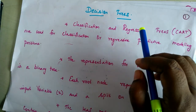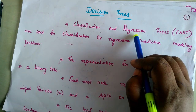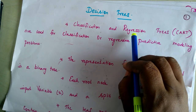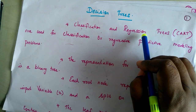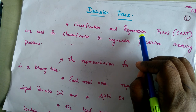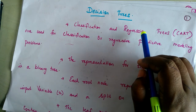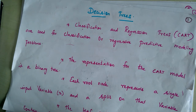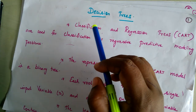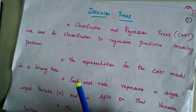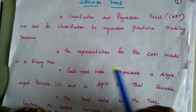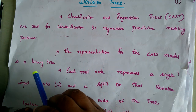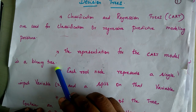In regression, we predict the outcome of a continuous variable. For example, given the square feet of a home, we can predict the rent. We saw such examples in linear regression and logistic regression in previous videos. The decision tree works well with both classification and regression problems, and its representation is given by a binary tree.